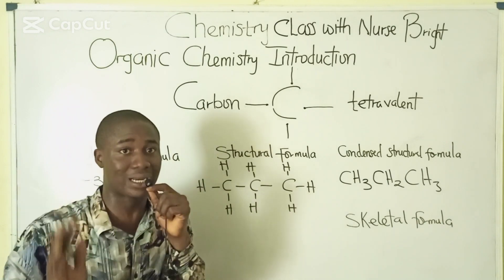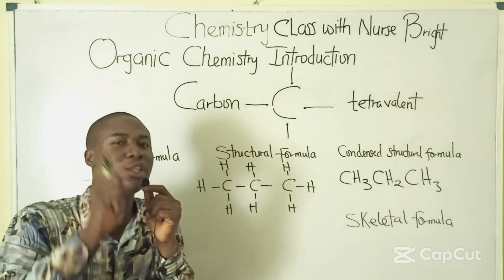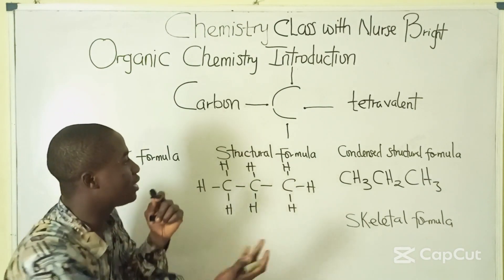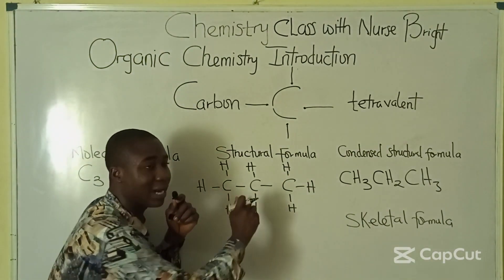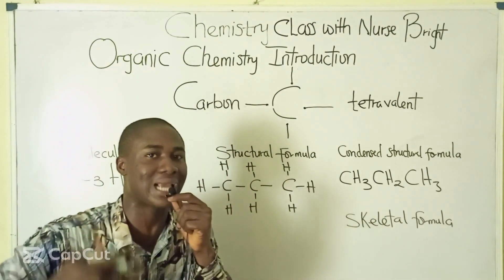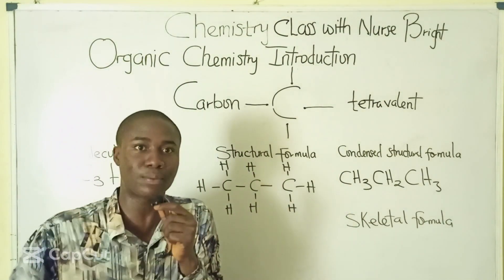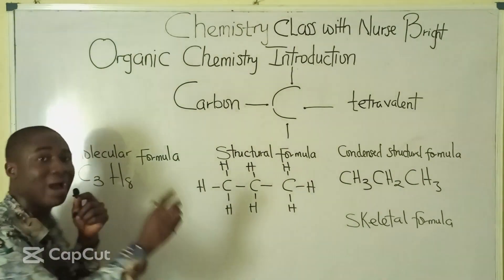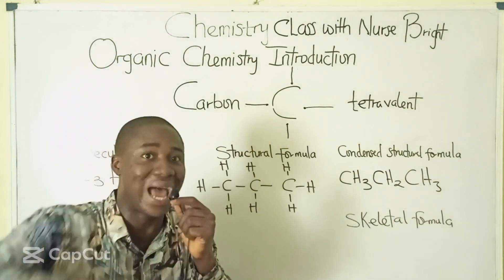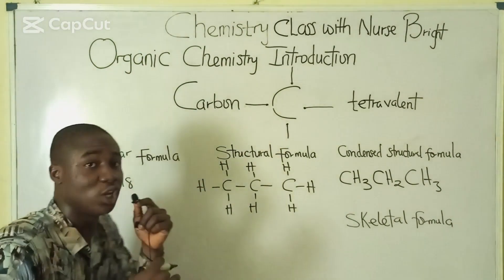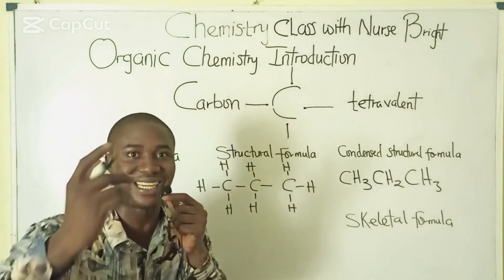Now let us go over to the skeletal formula. To write the skeletal formula — also called the line diagram — we have to be careful with how the compound is expressed. We have three carbon atoms. For the skeletal formula, you reduce the number of lines you draw by one. So for three carbon atoms, we draw two lines. For four carbon atoms, we would draw three lines.